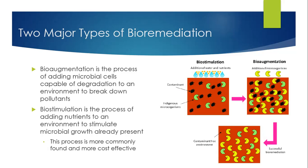The second major type of bioremediation is biostimulation, which is the process of adding nutrients to an environment in order to stimulate microbial growth already present in that environment. The difference between bioaugmentation and biostimulation is that bioaugmentation is adding new cells to the environment, while biostimulation is just adding nutrients so cells already there can grow and break down the pollutants. Biostimulation is more commonly found and also much more cost-effective than bioaugmentation.